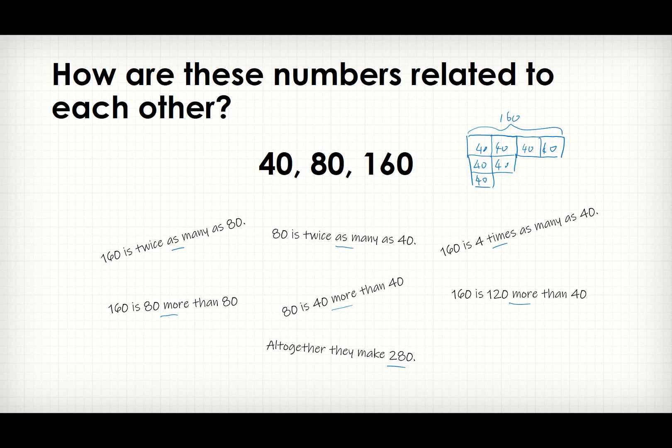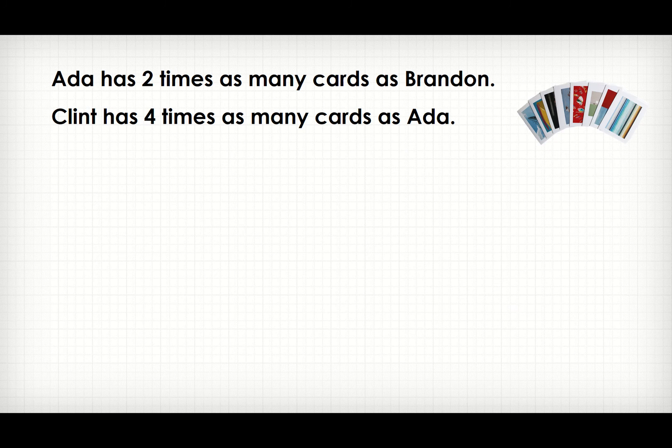So let's look at some questions and see whether we can solve them and learn how to draw a model for them. Ada has two times as many cards as Brendan. Clint has four times as many cards as Ada. When we see 'times as many as', immediately you want to draw a model. Our rule or tip does not change — whenever you see 'times as many as', immediately draw a model.